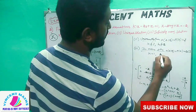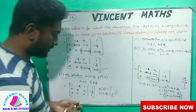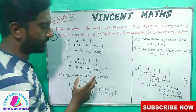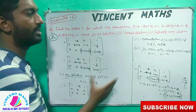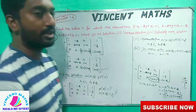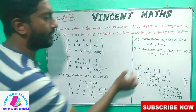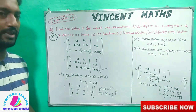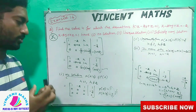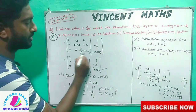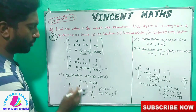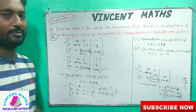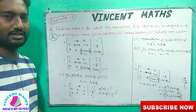So k equal to 1 gives no solution. K equal to minus 2 gives infinitely many solutions — here these entries become 0, 0. Okay friends, the important step is if you have done this step correctly, that is why you have the answer. Okay friends, we will see the next step. Thank you.